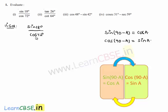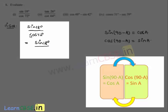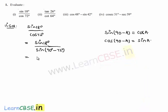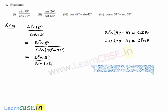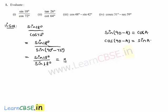In the numerator we have sin 18 degrees. Let us convert the denominator cos 72 degrees in terms of sine — that will be sin(90° − 72°), which equals sin 18°. So the expression becomes sin 18° divided by sin 18°, which is equal to 1.